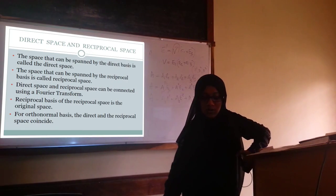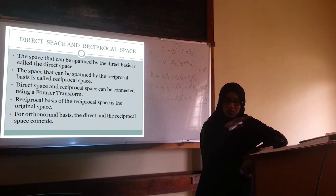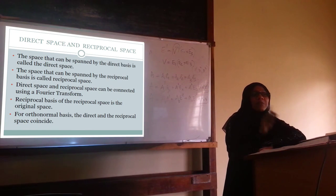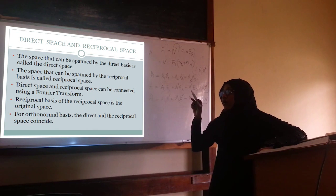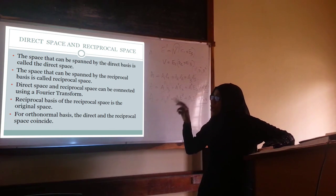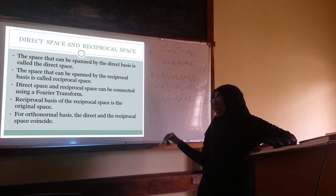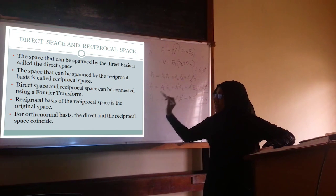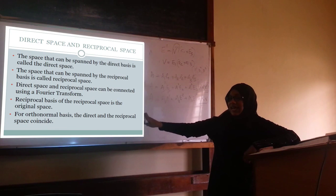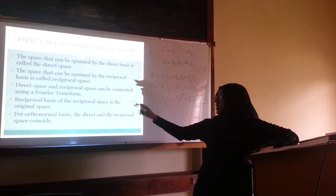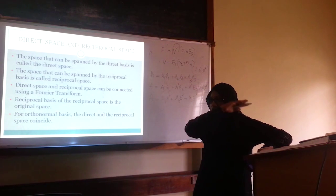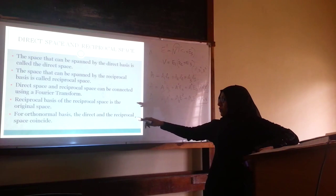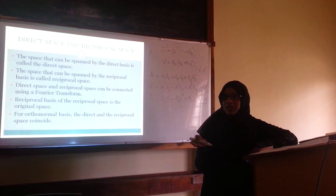We have defined two types of basis: the direct basis and the reciprocal basis. The space spanned by the direct basis is called the direct space, and the space spanned by the reciprocal basis is called the reciprocal space. The direct and reciprocal spaces are related by a Fourier transform — the reciprocal space is the Fourier transform of the direct space. Taking the reciprocal of the reciprocal space gives back the original direct space. For an orthonormal space, the reciprocal and direct spaces are the same.